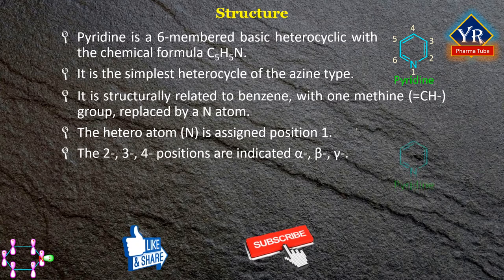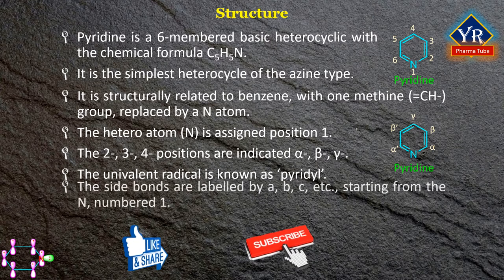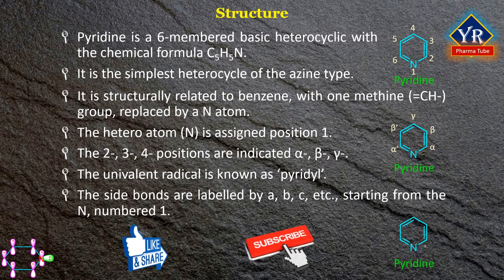The positions 2, 3, and 4 are indicated as alpha, beta, and gamma. The univalent radical is known as pyridile. The side of the heterocyclic ring is labeled by the letters A, B, C, etc., starting from the heteroatom numbered 1. Therefore, side A being between atoms 1 and 2 carbons, side B between atoms 2 and 3, and so on as shown in the structure for pyridine.